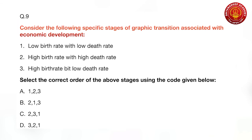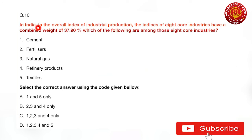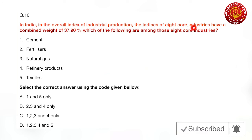The ninth question covers the demographic transition theory associated with economic development. You must know the correct order of its stages. In the beginning there is high birth rate and high death rate. Over time, as medical facilities improve, it moves to high birth rate but low death rate. Ultimately, as education and economic prosperity increase, birth rate also falls, giving low birth rate with low death rate. The correct order is two, three, one — option C.